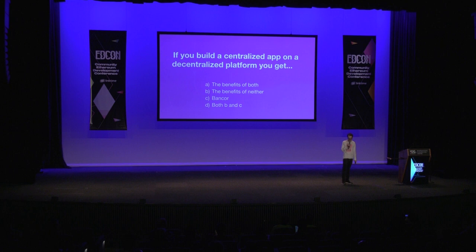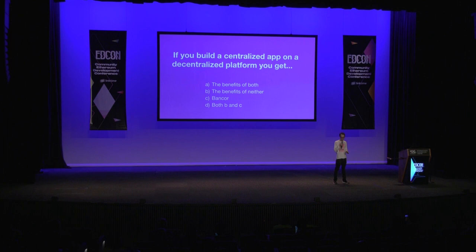Pop quiz: if you build a centralized app on a decentralized platform, you get A, the benefits of both; B, the benefits of neither; C, Bancor; or D, both B and C. Really, if you build a centralized app on top of a decentralized platform, the answer is B — you get the benefits of neither. You get all the decentralization and censorship resistance of Coinbase, and you get all the scaling of Ethereum.